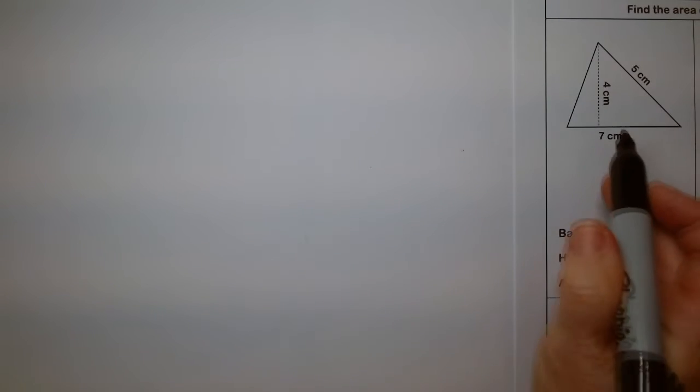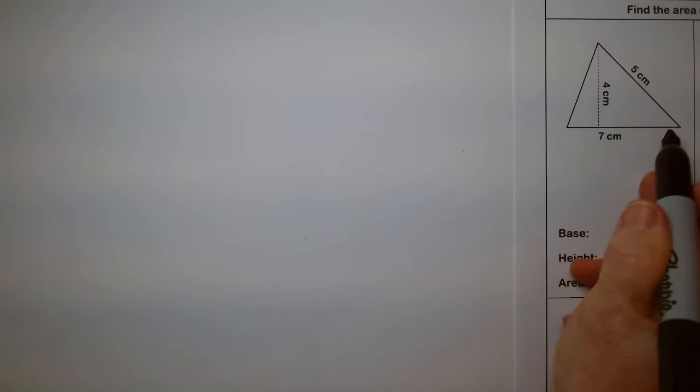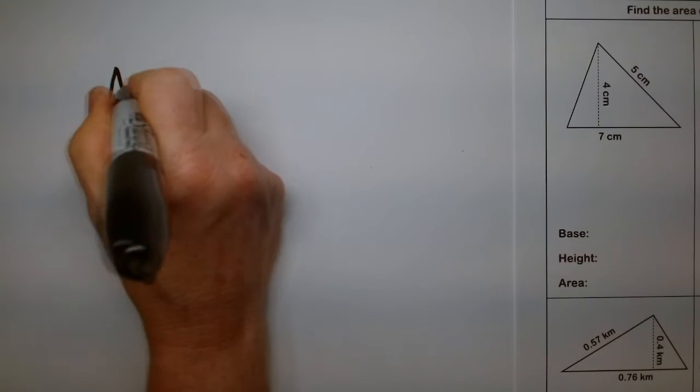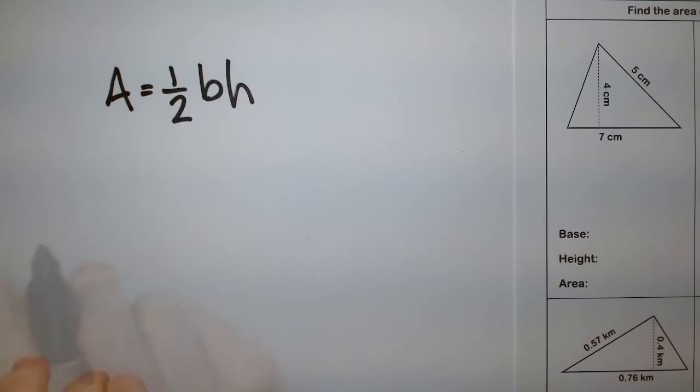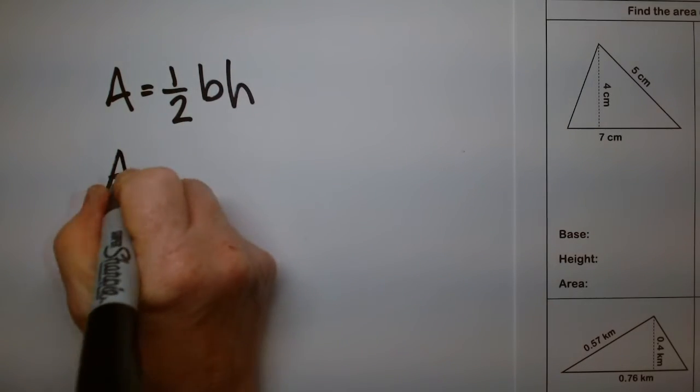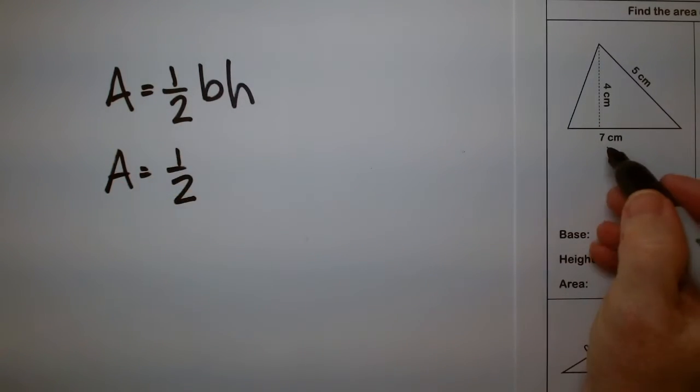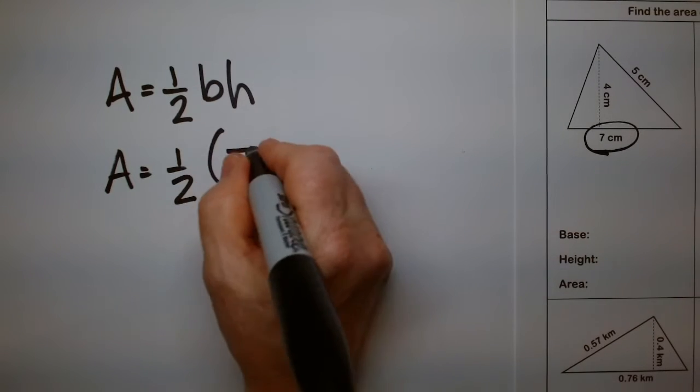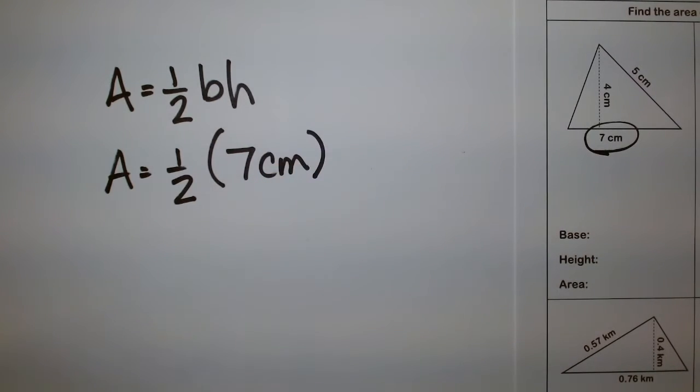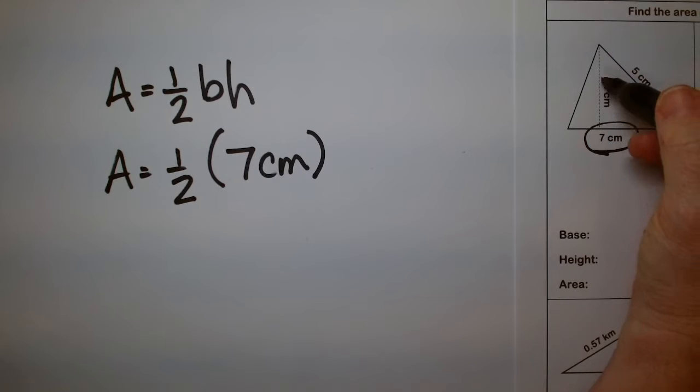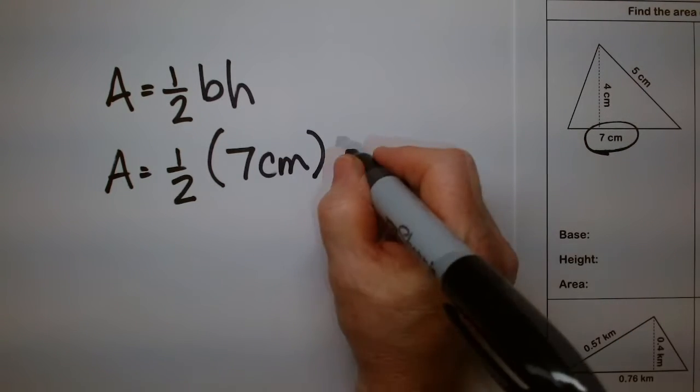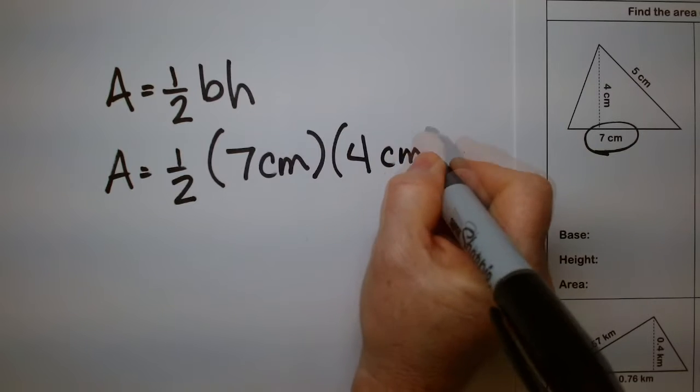Let's take a look at another example. This one's in centimeters. So my area is going to be the same formula, one half the base times the height. Area is one half, the base is 7, and the height is 4 because it comes straight up from the bottom up to the highest point, 4 centimeters.